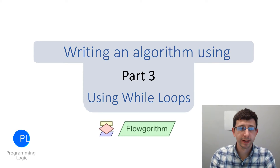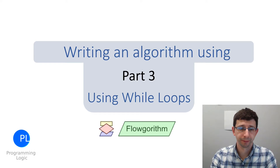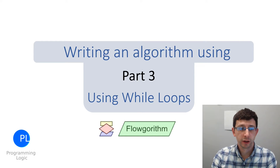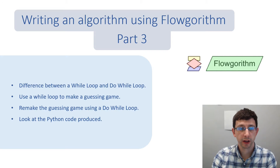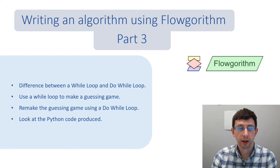Hello and welcome to this video, which is the third in a three-part series on using Flowgorithm to design an algorithm. In this third part, we're going to focus on condition-controlled iteration using while loops and do-while loops. We'll design a simple game where the user guesses a number between 1 and 10, and we'll see what Python code Flowgorithm produces for each loop type.